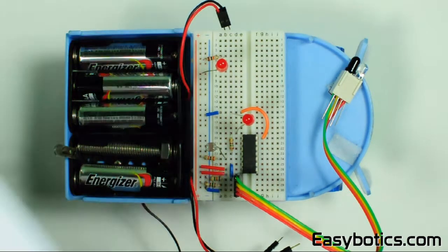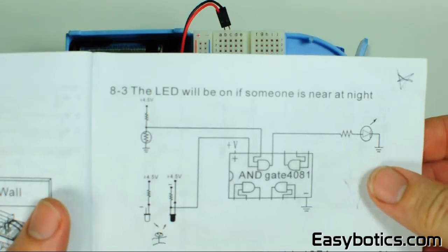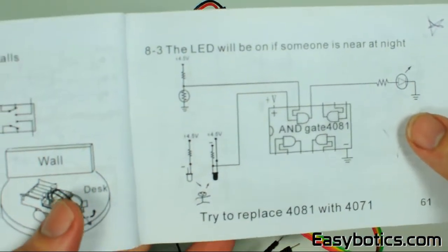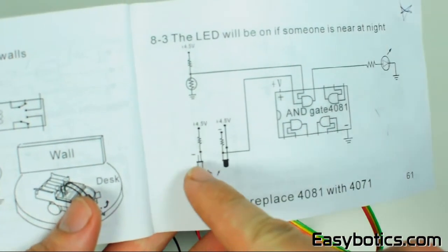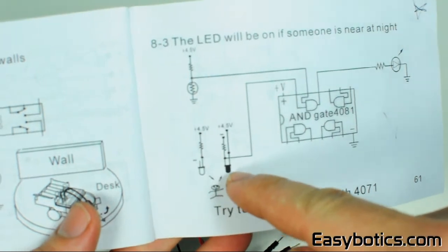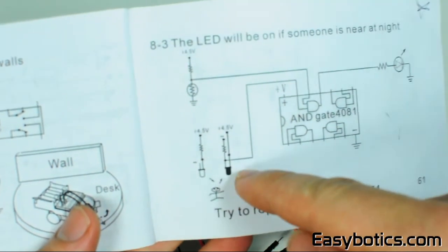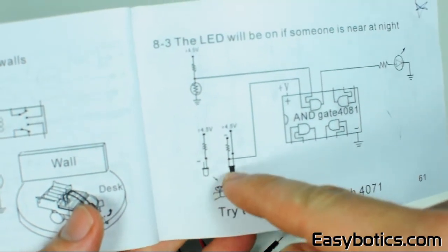Here we have the project from page 61. The LED will be on if someone is near at night. The circuit uses an infrared LED and a photo transistor to receive light reflecting off an object.